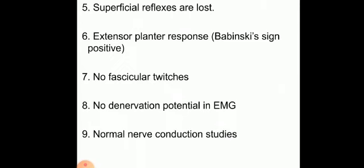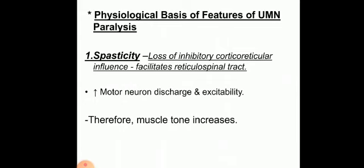Now we need to know in detail the physiological basis of some features of upper motor neuron paralysis. First, spasticity: there is increased muscle tone, which is a significant feature of UMN paralysis. This spasticity occurs due to increased discharge of motor neurons and increased excitability of the motor neuron pool. In UMN lesion, not only the corticospinal fibers are interrupted, but also the cortico-reticular fibers get damaged, resulting in increased motor neuron discharge and excitability — that is the basis of spasticity.